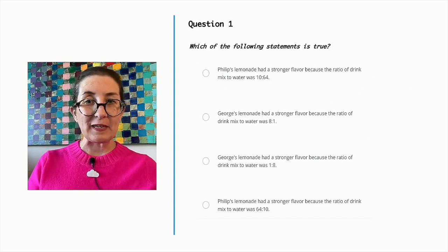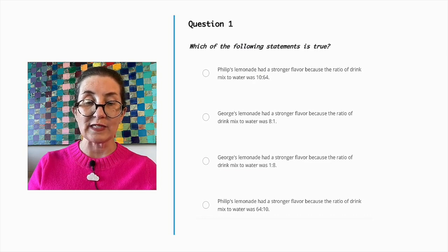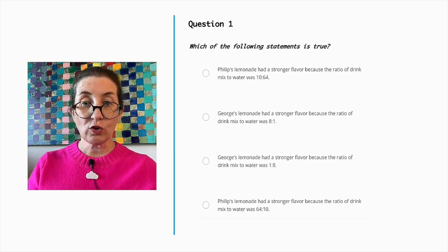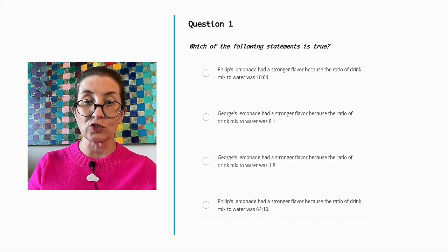Philip's lemonade had a stronger flavor because the ratio of drink mix to water was 10 to 64. George's lemonade had a stronger flavor because the ratio of drink mix to water was 8 to 1. George's lemonade had a stronger flavor because the ratio of drink mix to water was 1 to 8. Or, Philip's lemonade had a stronger flavor because the ratio of drink mix to water was 64 to 10.